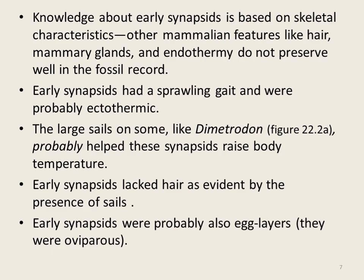Sprawling gait is one of the most primitive and original limb postures from which other postures evolved. In the sprawling pattern, the limbs are not directly beneath the body but are spread out in an irregular walking or movement pattern — for example, like a crocodile. Early synapsids were also ectothermic, meaning their body temperature changed with changes in environmental temperature.